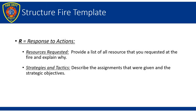This portion of the narrative becomes the meat and potatoes of exactly what you did throughout the incident. For every action there is an opposite and equal reaction, and such circumstances need to be documented. R stands for response to actions. What resources were requested? What strategy and tactics did you perform during the incident? These are important points that need to be documented in your narrative, because if questions arise later, the details of your actions may be the only trigger to get accurate information about the incident — meaning what you write here may be the only thing you remember.